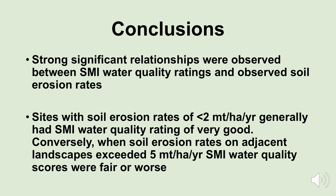So what we found is that benthic macroinvertebrate numbers and this technique can replace all these visual estimates that are very difficult to repeat. Strong, significant relationships were observed between water quality ratings and observed soil erosion rates — so our benthic macroinvertebrate scores predicted the water quality and erosion rates. Sites with soil erosion rates of less than 2 metric tons per hectare per year generally had water quality ratings of very good. Conversely, when soil erosion rates on adjacent landscapes exceeded 5 metric tons per hectare per year, the SMI water quality scores were fair or poor.